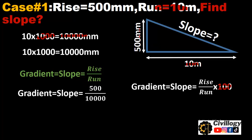Rise is 500, as you can see over here. This is rise 500, and the run is, you can say, y divided by x. Y is 500 and x is 10,000 millimeters.